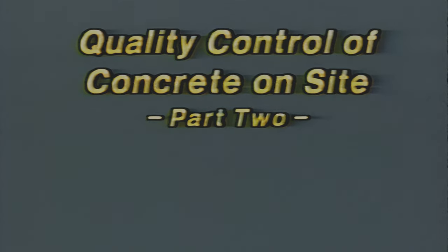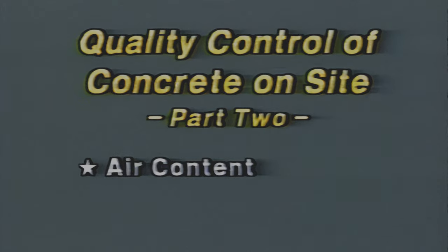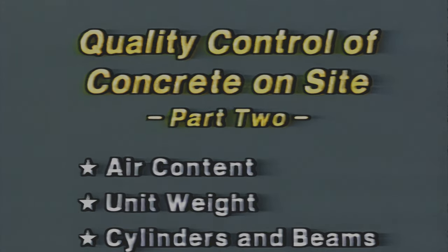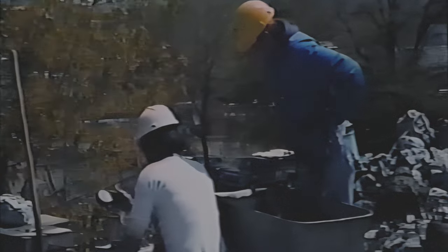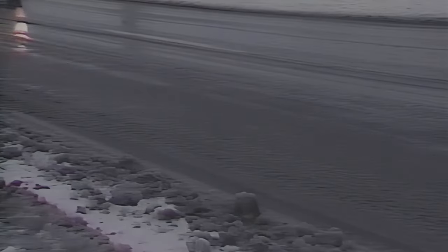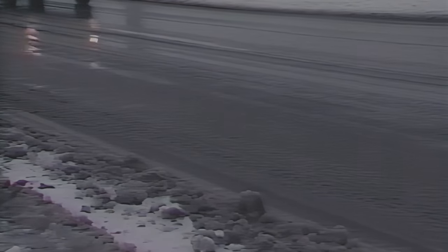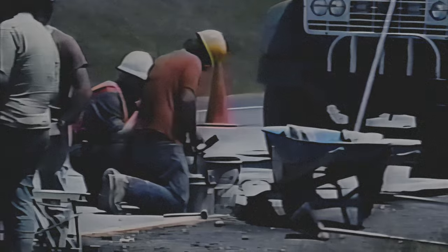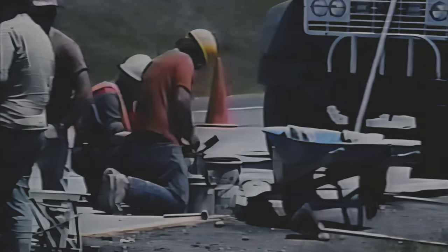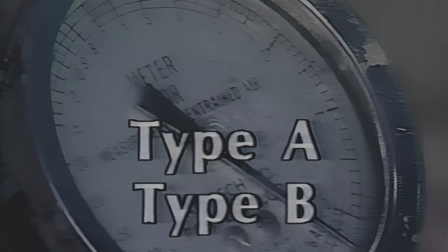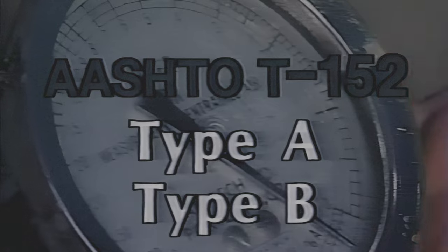This second part of quality control of concrete on site will examine the test methods for air content and unit weight, plus the procedures for making cylinders and beams for compressive and flexural strength tests. To begin, air content test methods. The results of air content tests indicate the freeze-thaw durability of concrete. Air-entrained concrete with the specified air content performs much better than non-air-entrained concrete in freezing and thawing conditions. On the job, concrete can be rejected if its air content is not within the allowed range.